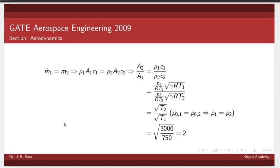Now rho is p by RT. c1 is equal to M into a, but mach number is 1 so c1 is equal to a1 which is nothing but square root of gamma R T1. Similarly we can write for rho_2 and c2. Now p01 is equal to p02, therefore for the same mach number we have p1 is equal to p2.